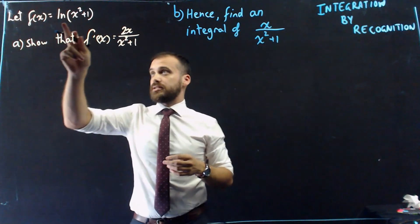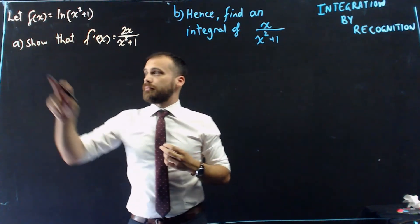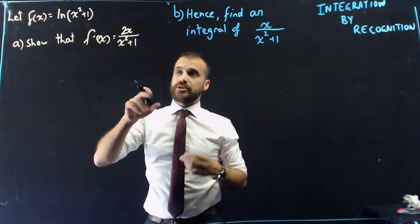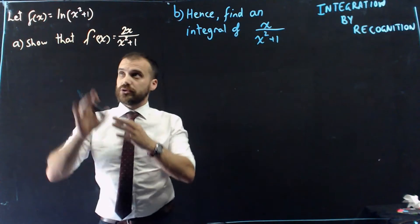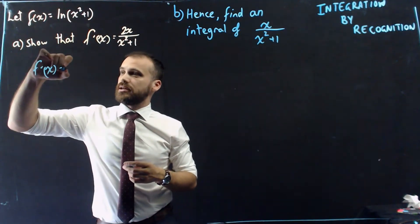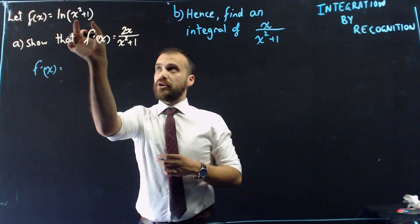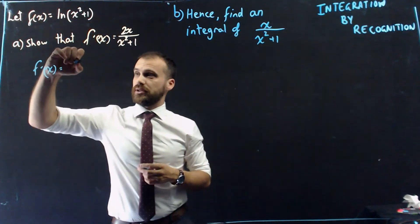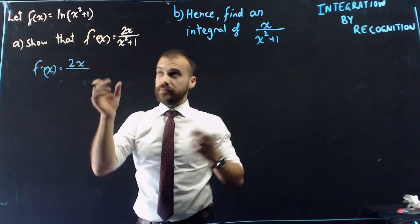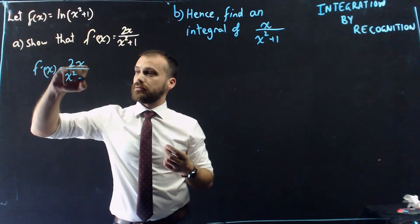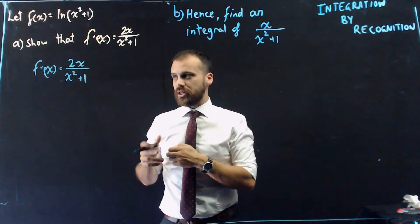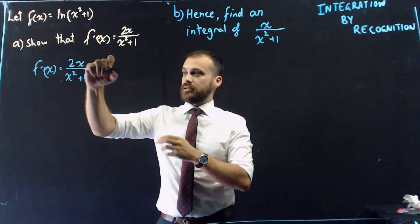It always starts the same way. f of x is some function. There it is. Part A: Show that f dash x equals 2x on x squared plus 1. Well, that's pretty straightforward because we have a rule for that. So f dash of x is going to be equal to the derivative of whatever's in the brackets, in this case 2x, and over whatever's in the brackets. So it's really just a one-stepper. We could have done it with some chain rule stuff, but that's it. Done. That's part A done.